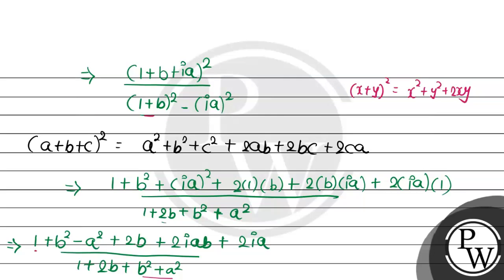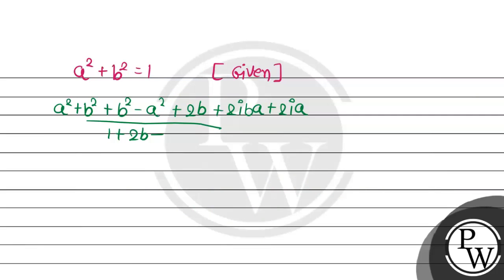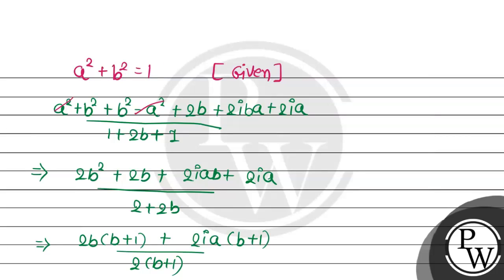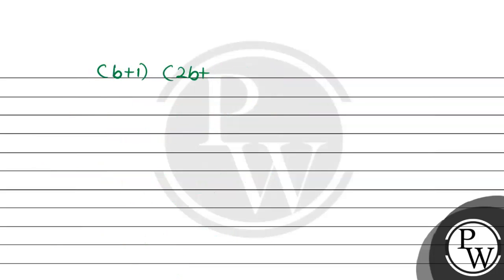In the division, it will be 1 plus 1 plus 2b. In place of a square plus b square, substitute 1. Cancel out what cancels. Here a square a square cancel out, b square b square cancel out. So we get 2b plus 2b plus 2iab plus 2ia in division 2 plus 2b. Taking common, here 2b common in bracket b plus 1, here 2ia common so bracket b plus 1, division 2 common b plus 1.